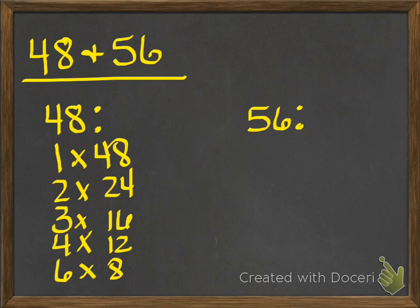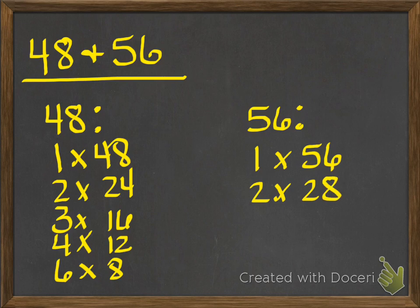So that's 1, 2, 3, 4, 6, 8, 12, 16, 24, and 48. Now we're going to do the same thing with 56. I know that 1 times 56, 2 times 28, 4 times 14, and 7 times 8 give me 56. So those factors are 1, 2, 4, 7, 8, 14, 28, and 56.